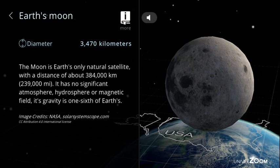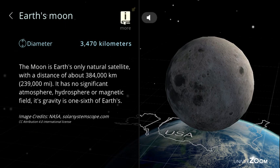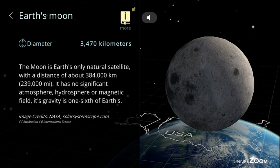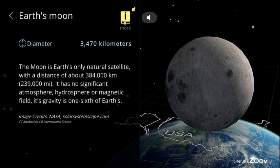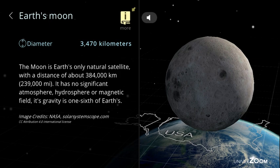Earth's moon, diameter: 3,470 kilometers. The moon is Earth's only natural satellite, with a distance of about 384,000 kilometers, 239,000 miles. It has no significant atmosphere, hydrosphere or magnetic field. Its gravity is one-sixth of Earth's.